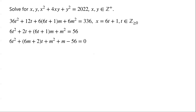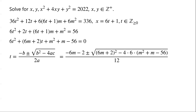Using the quadratic formula, we can find t equal to negative b plus or minus root of (b squared minus 4ac) over 2a, where a equals 6, b equals 6m plus 2, and c equals m squared plus m minus 56. This simplifies to (1/6) times (negative 3m minus 1 plus or minus root of (3m squared plus 337)).